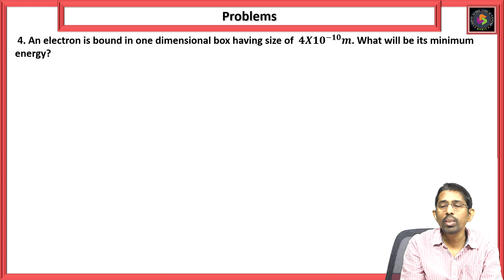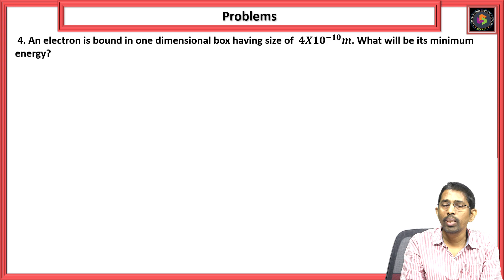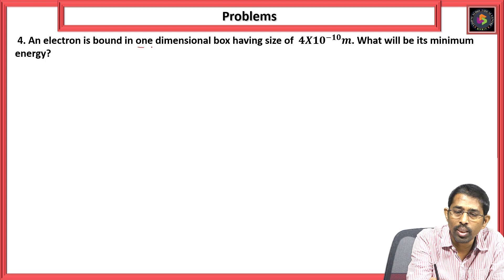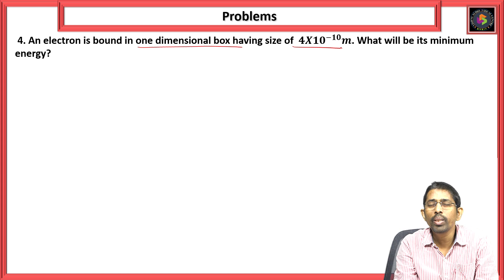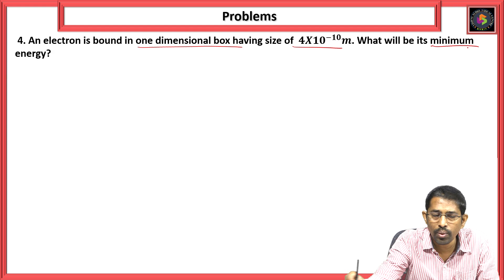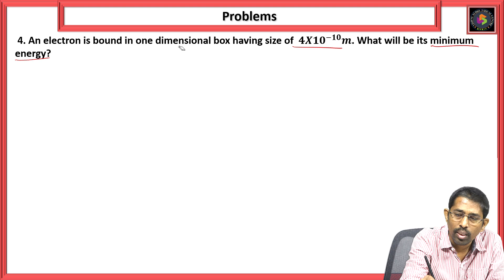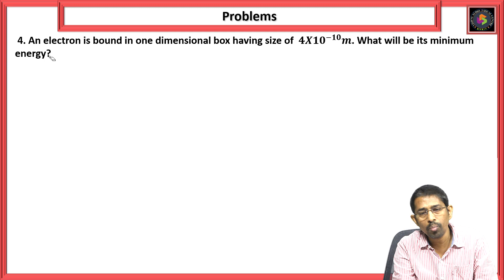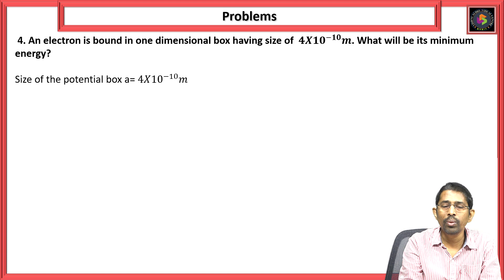The next problem: an electron is bound in a one-dimensional box having a size of 4 × 10⁻¹⁰ meters. What will be its minimum energy? The size of the potential box A = 4 × 10⁻¹⁰ meters, and we have to find the minimum energy. For a particle in a potential box, the formula is En = n²h² / (8mA²).